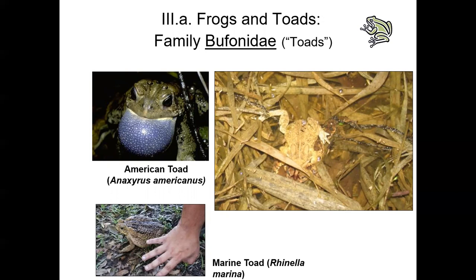Most toads are terrestrial or fossorial but all return to water to breed. Adults and young burrow into the ground to avoid freezing or very dry temperatures. They are only diurnal for a short period during spring and fall, and mostly active at night in hot, humid weather. During breeding season, males produce a high-pitched trill, and females can release up to 20,000 eggs in paired strings fertilized externally. The male in amplexus wraps his forearms around the female's waist so his cloaca aligns with hers, depositing sperm as she lays eggs in two separate strings — unlike tree frog globular masses.